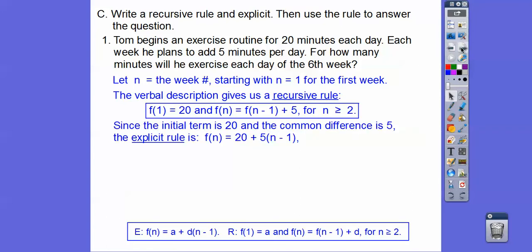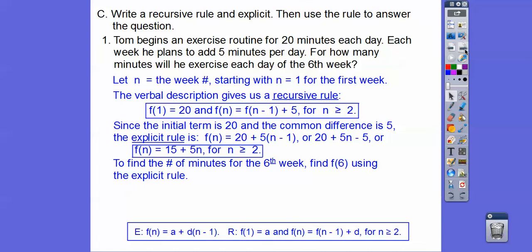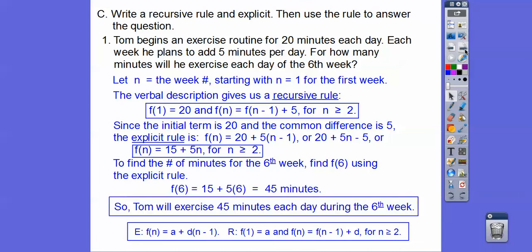So the recursive rule: the first week is 20 minutes, and each additional week is the week before plus five, for N greater than or equal to two. Since the initial term is 20 and the common difference is five, the explicit rule is 20 plus 5 times (N minus one). Distributing gives us 15 plus 5N. Plugging in N equals six, we get F(6) equals 45 minutes — so Tom exercises 45 minutes each day during the sixth week.